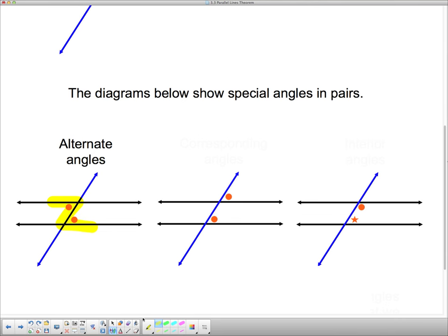The next one are called corresponding angles. And corresponding angles also form a pattern. They're known as the F pattern. Now that F is kind of upside down, but you can see that those two little dots in there form the F pattern.